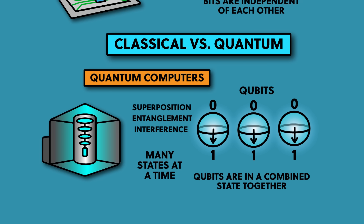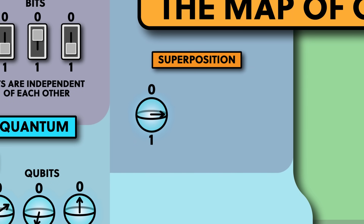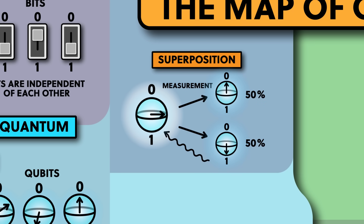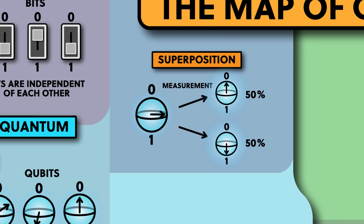Qubits also have the option to be in a thing called a superposition state, which is when the arrow points in any other direction. This superposition state is a combination state of 0 and 1. When you measure a qubit, the output it gives will still end up being either a 0 or a 1, but which one you get depends on a probability which is set by the direction of the arrow. If the arrow is pointing more upwards, you're more likely to get back a 0 than a 1. If it's pointing downwards, you're more likely to get a 1 than a 0. And if it's exactly on the equator, you'll get either state with a 50% probability.